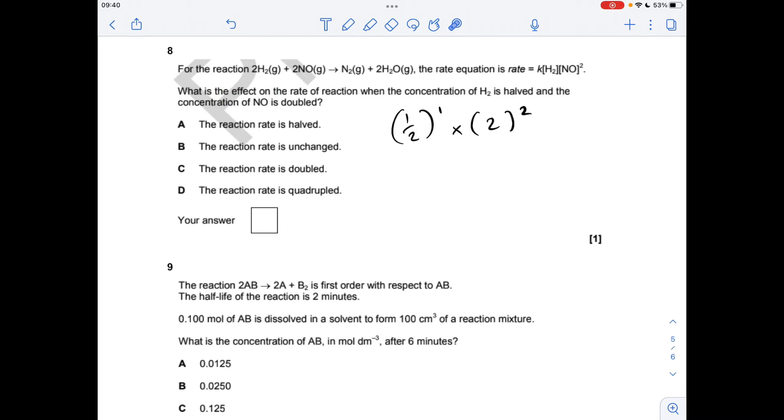Next one. So if the hydrogen is halved, it's first order with respect to hydrogen. So it'll be halved to the power 1 effect on the rate. But we're multiplying that by what they've done to the other concentration. So they've doubled the NO. It's second order, so that gets squared. So it's a half times 4 effectively, which is 2. So the reaction rate will double. So the answer was C.